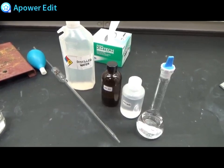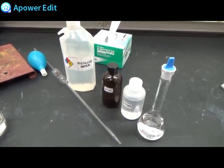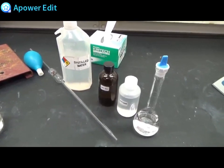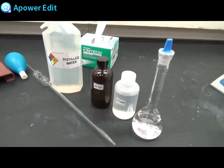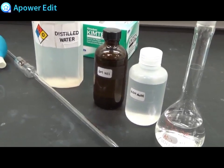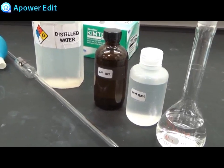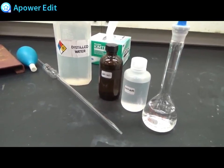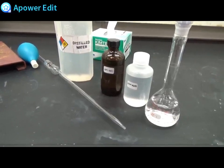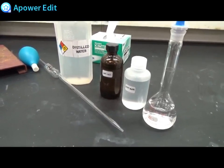The chemicals that you will need include a 0.5 molar glycine solution, 0.5 molar NaOH, 6 molar hydrochloric acid, and distilled water for rinsing your pH probe as well as to include in your acidic solution.